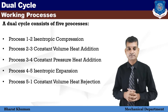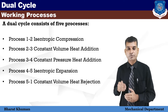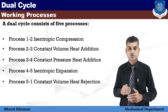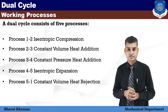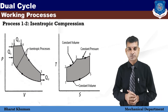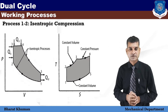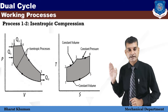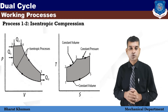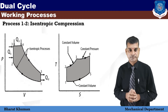An air standard cycle that can more closely approximate the pressure variation is the air standard dual cycle. A more capable approach models the combustion process as a combination of two heat transfer processes: one isochoric and one isobaric process. The thermal efficiency of the dual cycle lies between the Otto and diesel cycle.